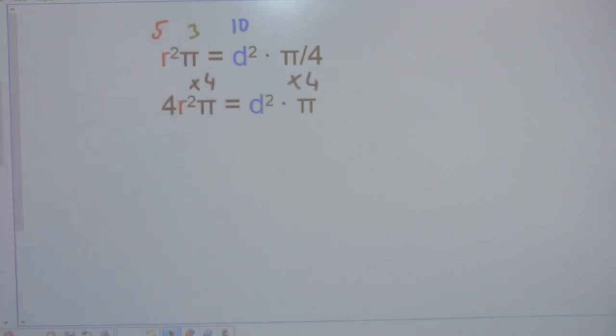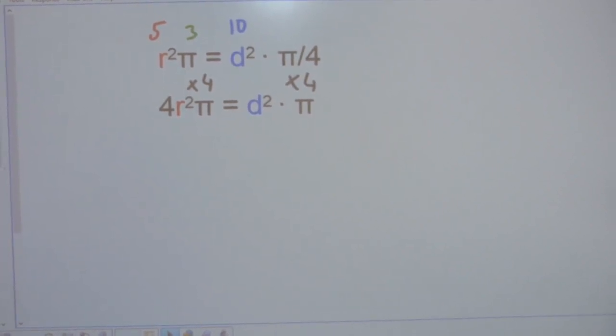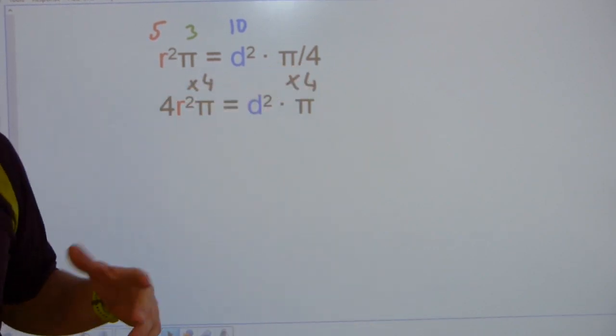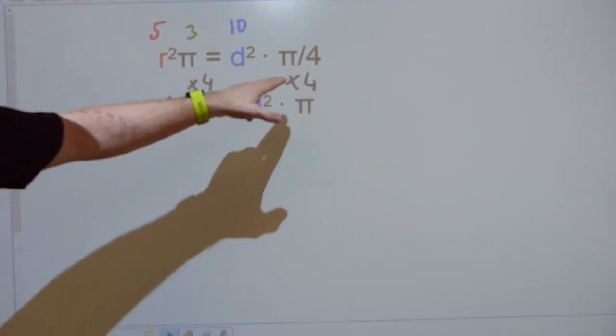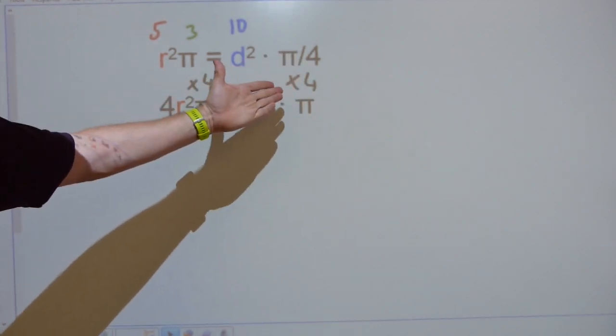To make this equation simpler, let's do a straightforward algebraic step. Let's multiply both sides of the equation by 4 to get rid of that division, so we don't have a fraction in it.